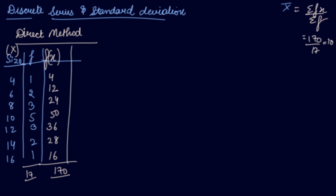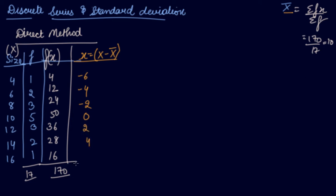Now in the direct method, you take the deviation from the mean itself to get small x (x − x̄). The x series minus x̄ gives: 4−10 = −6, 6−10 = −4, 8−10 = −2, 10−10 = 0, 12−10 = 2, 14−10 = 4, 16−10 = 6.